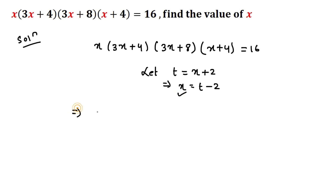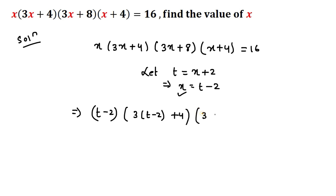The above equation becomes (t-2) multiplied with 3(t-2)+4, multiplied with 3(t-2)+8, multiplied with (t-2)+4, equals 16.